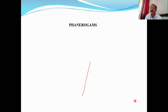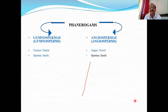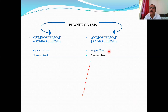The next group is phanerogams — flowering, seed-producing plants, also called Spermatophyta. These plants are of two types: gymnosperms (Gymnospermae) and angiosperms (Angiospermae). 'Gymnos' means naked, 'sperma' means seed; 'angio' means vessel or case, and 'sperma' means seed. So angiosperms have seeds enclosed in a vessel or case — the fruit — while gymnosperms have naked, unenclosed seeds.